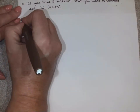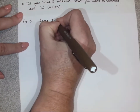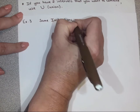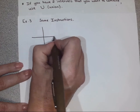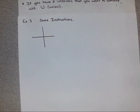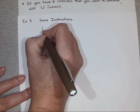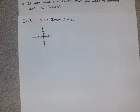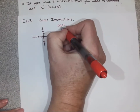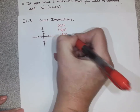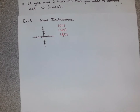We'll do one more where we have to look at a graph — same instructions: tell me where it's increasing, decreasing, and constant. You don't necessarily need graph paper; most of the graphing we'll do is just sketches. Use the lines in your notebook paper to keep your horizontal line straight. Plot these points: zero one, negative two zero, and two zero, and then we're going to connect them.